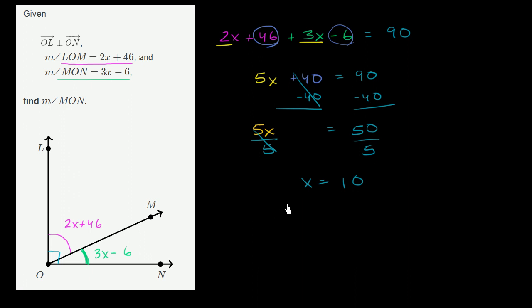Now, our answer is not 10. We've just figured out what x is. What they ask us for is, what's the measure of angle MON? Well, we already know that the measure of angle MON is equal to 3x minus 6, which is equal to 3 times 10 minus 6, which is equal to 24 degrees.